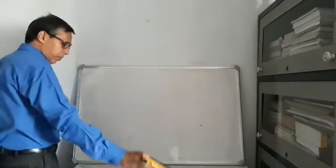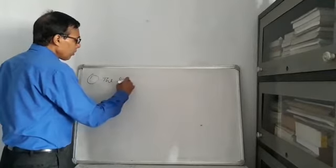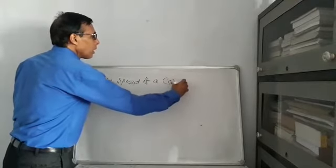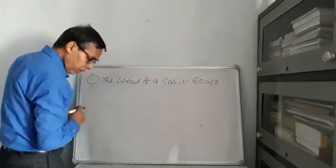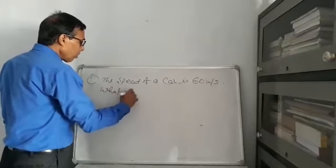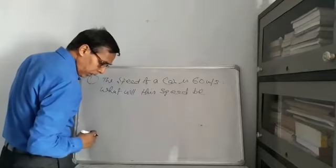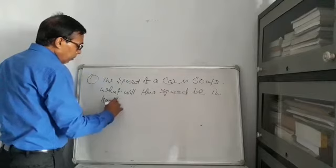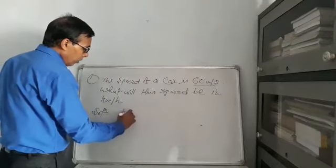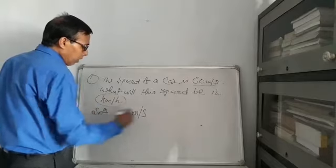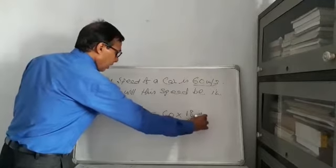Now some questions based on this. The first question: the speed of a car is 60 meters per second — what will this speed be in kilometers per hour? Solution: the speed of the car is given as 60 meters per second, and we have to convert it into kilometers per hour.